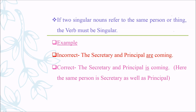Rule 3: If two singular nouns refer to the same person or thing, the verb must be singular. Example: 'The secretary and principal is coming' is correct (not 'are coming'), because the same person is both secretary and principal. Rule 4: If singular subjects are preceded by 'each' or 'every', the verb is usually singular. Example: 'Every boy and girl was ready' is correct (not 'were ready').